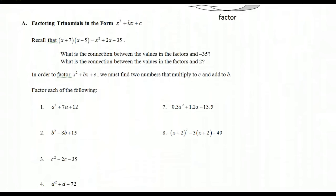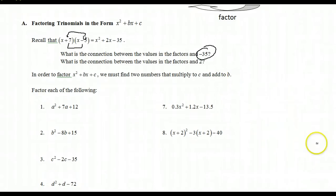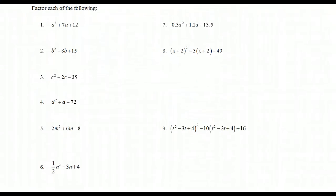Factoring trinomials in the form x squared plus bx plus c — in this case the leading term is 1x squared. The connection between the values in the factors and minus 35 is the product of the factors. The connection between the values and positive 2 is the sum — positive 7 and minus 5. So we have to find two numbers that multiply to c and add to b. For example: a squared plus 7a plus 12 equals — two numbers that multiply to 12 and add to 7 are 4 and 3.